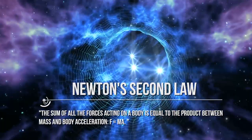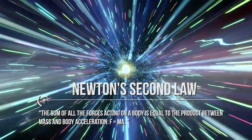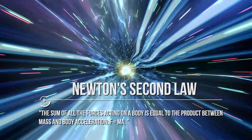Let's now pass to the second principle of dynamics, also called Newton's second law. It links force to the state of motion, and states that the sum of all the forces acting on a body is equal to the product between mass and body acceleration: F equals MA. Force F and acceleration A are directly proportional quantities — meaning that if you increase the force, the acceleration will increase; if you decrease the force, the acceleration decreases. By dividing the force by the acceleration, the inertial mass of a body is obtained, which represents the resistance that a body opposes to the variation of its state of motion.